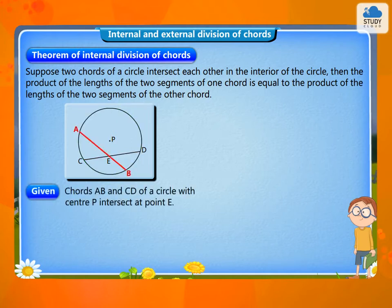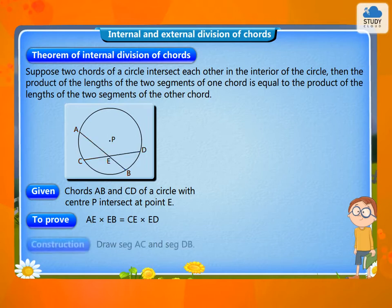Given: chords AB and CD of a circle with center P intersect at point E. To prove: AE × EB = CE × ED. Construction: draw segment AC and segment DB.